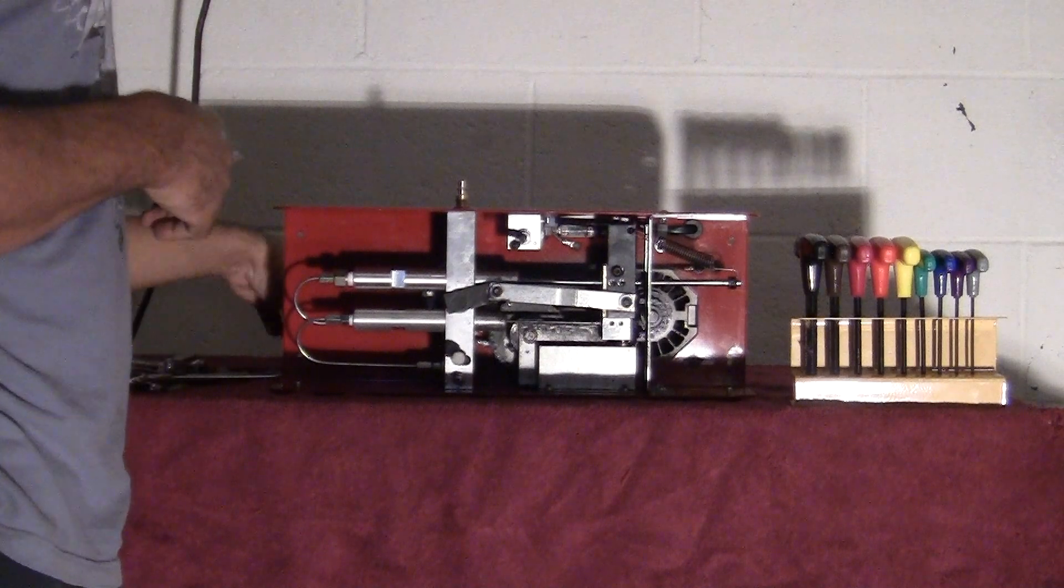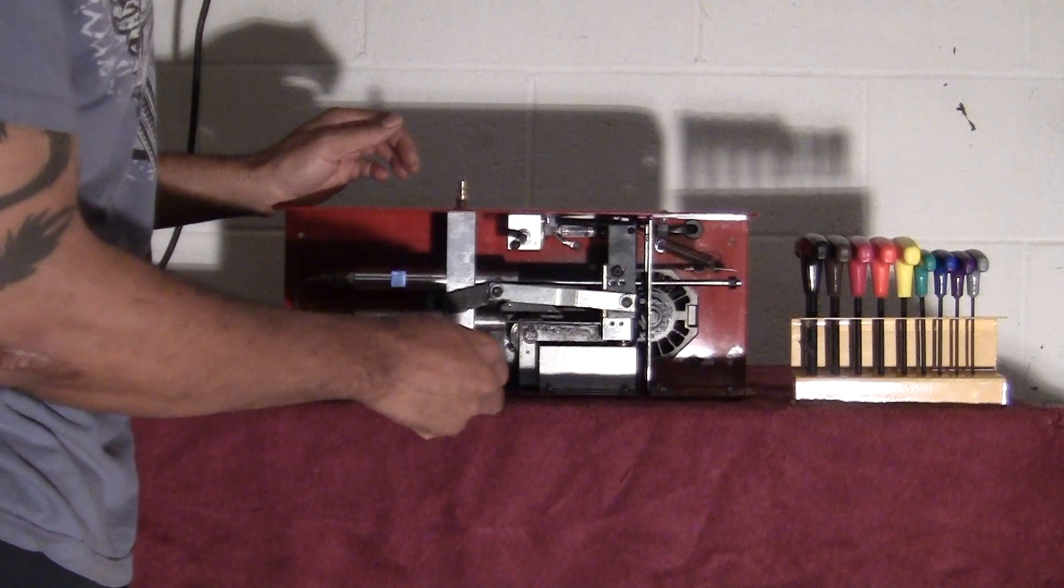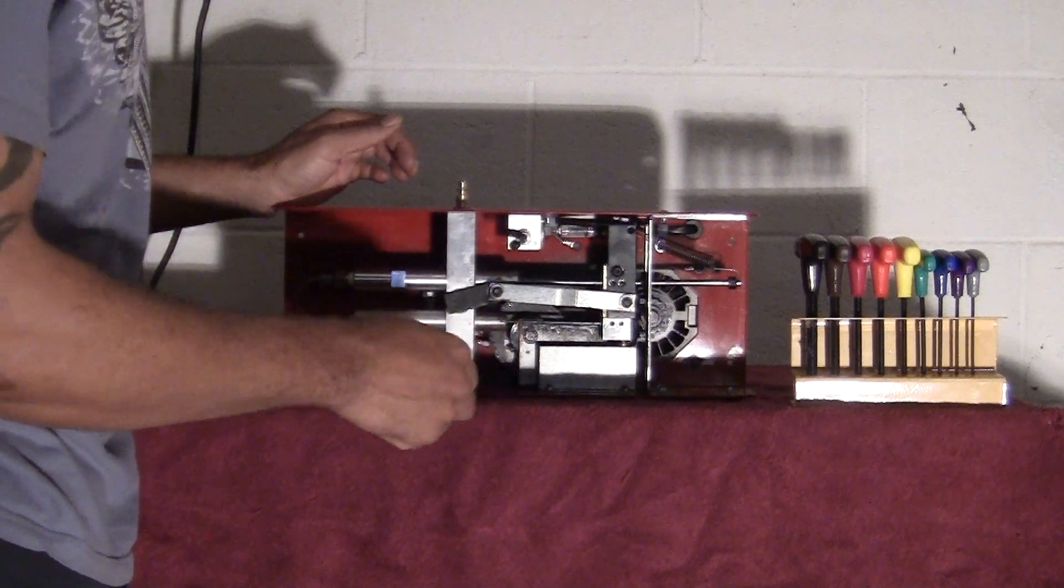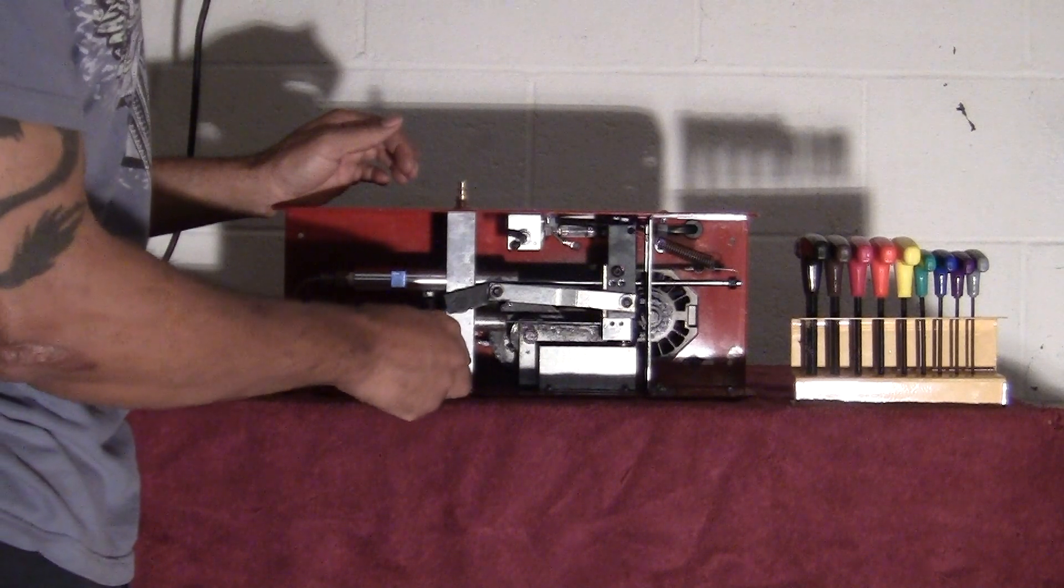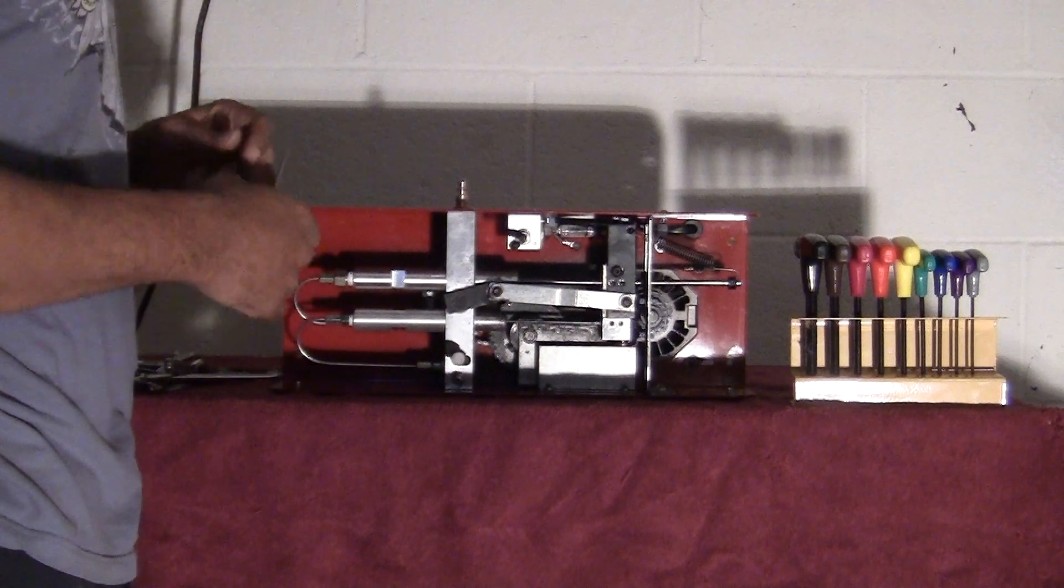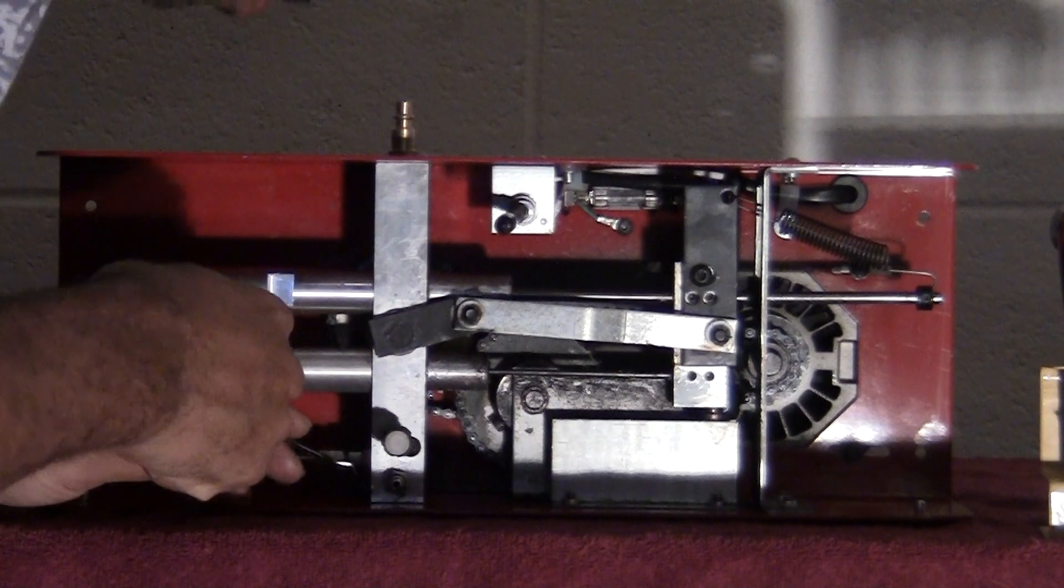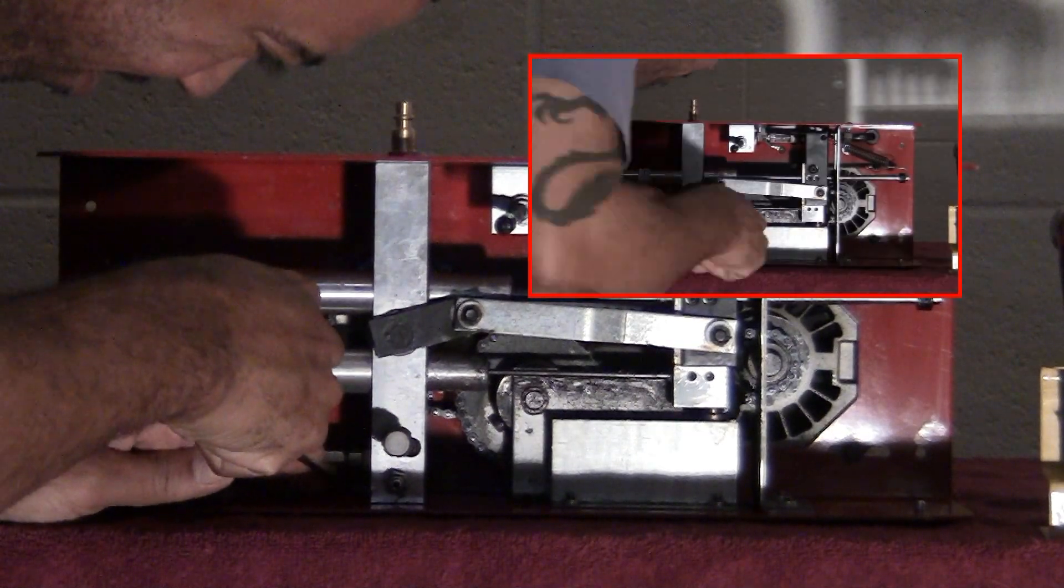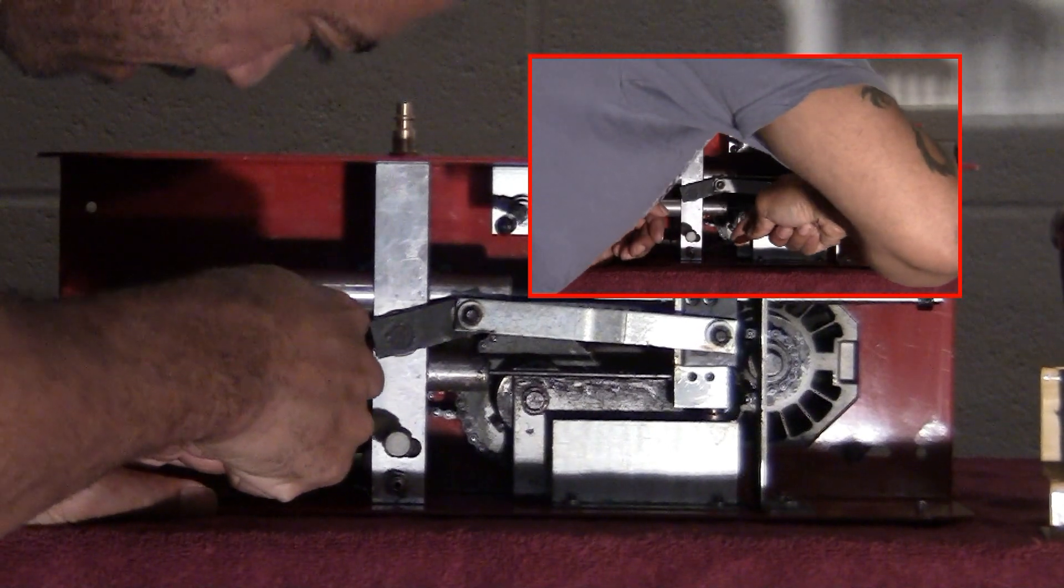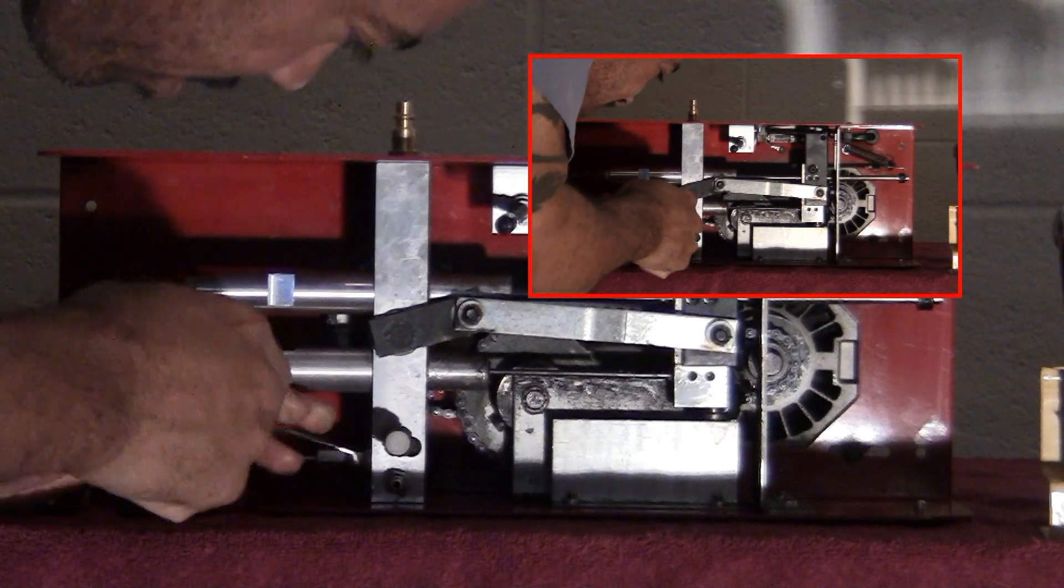Also, one of the things you're going to need is a dental pick because we need to scribe the air cylinder block so we know it lines back up when we reinstall everything. So let's go ahead and get started with disassembling this thing. Alright, one of the first things I want to do is scribe the base here of the air cylinder block just so I know where it is and I'll put it back to the exact same place when I reinstall it.